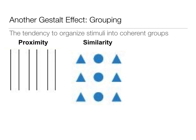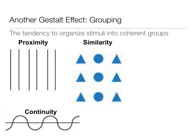Similarity: we're more likely to see a column of triangles, a column of circles, and a column of triangles than three rows containing both shapes — we group by similarity into columns rather than rows. Continuity: we're likely to see a squiggly line and a straight line as two separate overlapping things rather than a bunch of half-circles lined up together. Continuity allows us to group things into two distinct objects that make more sense.